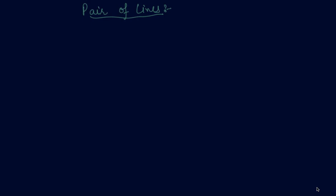Hello students, my name is Sumit Mehta. Today in this lecture we will discuss about what is a pair of lines and what are intersecting lines. So whenever two lines, let's say line A and line B intersect each other, this is called intersecting lines.